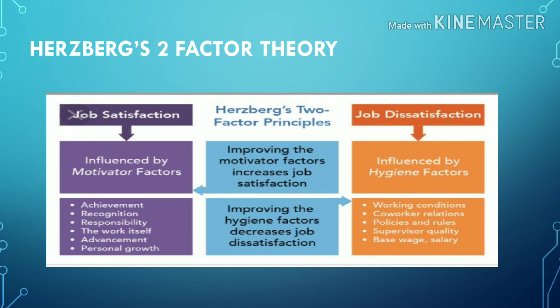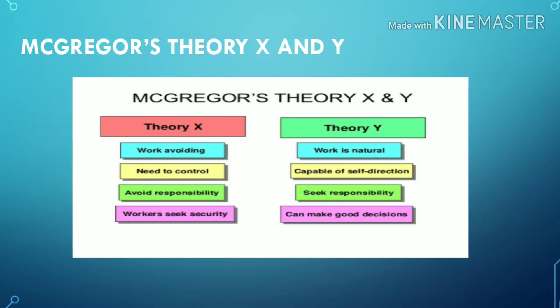Herzberg's Two-Factor Theory: improving motivator factors increases job satisfaction, while improving hygiene factors decreases job dissatisfaction. Job dissatisfaction is influenced by hygiene factors, which include working conditions, co-worker relations, policies, supervisor quality, and wages and salary. Job satisfaction is influenced by motivator factors, which include achievement, recognition, responsibility, work itself, advancement, and personal growth.